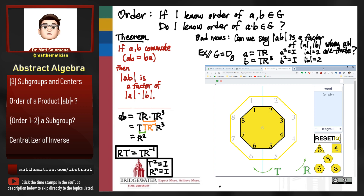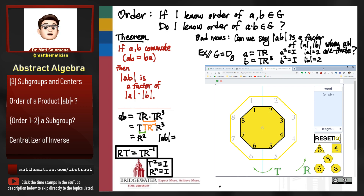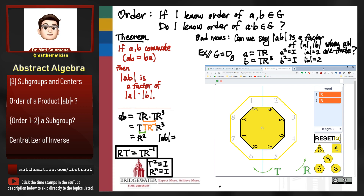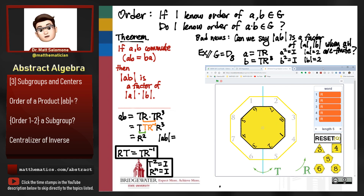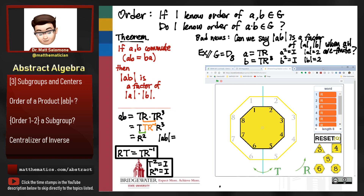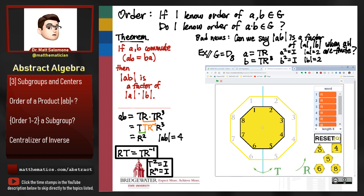So A times B gives me R squared. How many times do I have to apply R squared before I get back to the identity? In the dihedral group of the octagon, applying R squared once, twice, three times, four times — it takes four applications of R squared to get back to the identity. So the order of A times B is equal to 4.